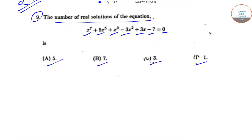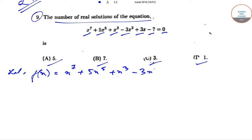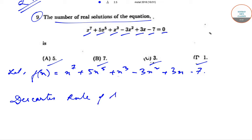Let f(x) = x^7 + 5x^5 + x^3 - 3x^2 + 3x - 7. What we'll be using here is the Descartes' Rule of Signs to find out the number of real roots and imaginary roots.